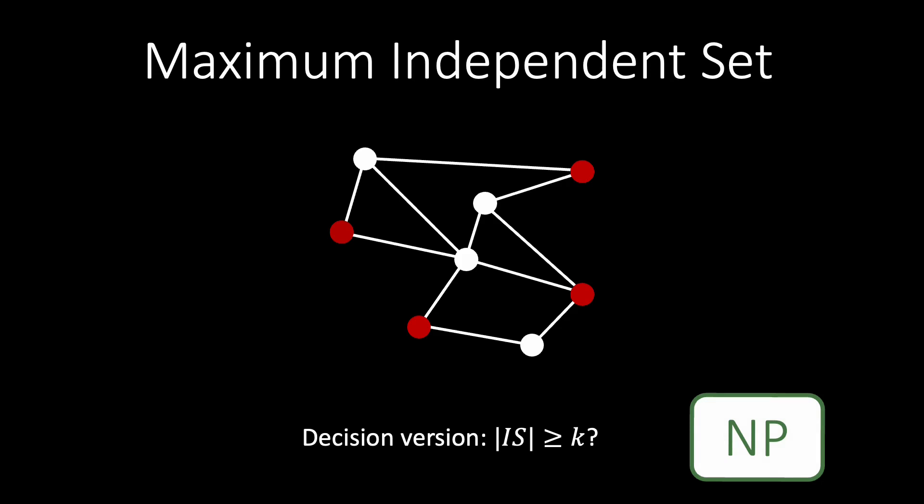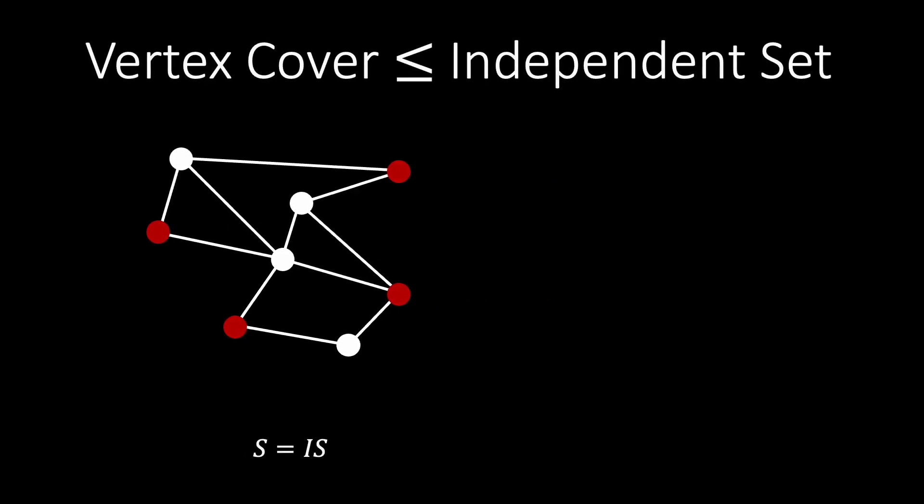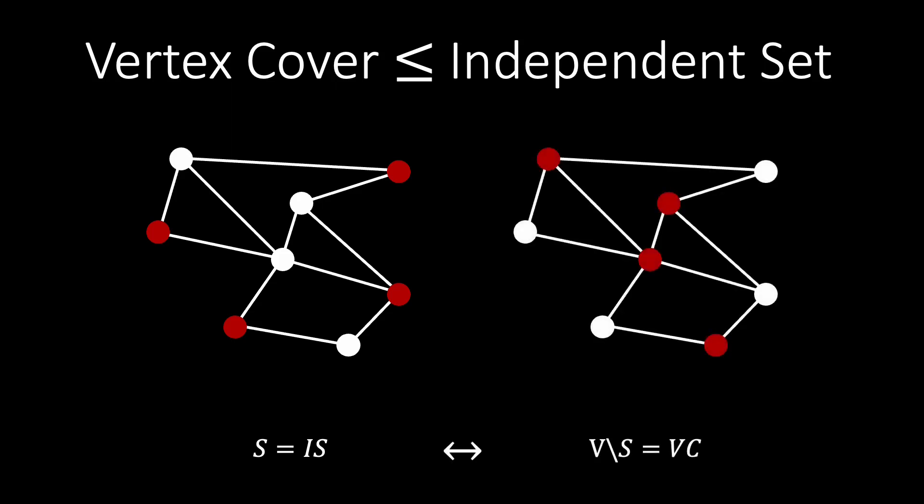There is another relation between independent set and vertex cover: we can find a polynomial time reduction from one to the other. Suppose we have found an independent set in a graph. Then, for the same graph, the complement of the vertices in the independent set forms a vertex cover, because for no edge in the graph can both endpoints be in the independent set. This implies that if we know how to solve the independent set problem efficiently, we could also solve the vertex cover problem efficiently.